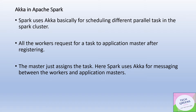Let's see how Akka is leveraged or used in Apache Spark. Spark works on the concept of massively parallel processing. Here we have different executors running in parallel, working on a single Spark job across their specific tasks. Akka is leveraged here for scheduling the different parallel tasks on different executors in the Spark cluster. All the workers need to communicate with the application master — the single source controlling how tasks are allocated to different executors — and this communication happens with the help of Akka in the form of asynchronous message passing.